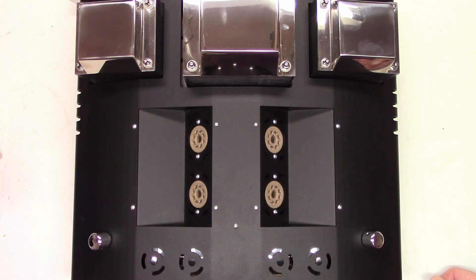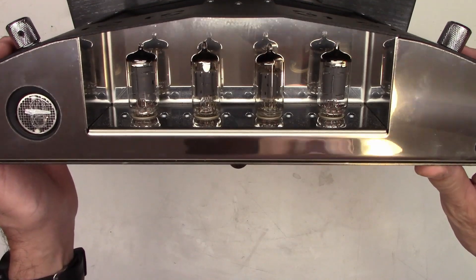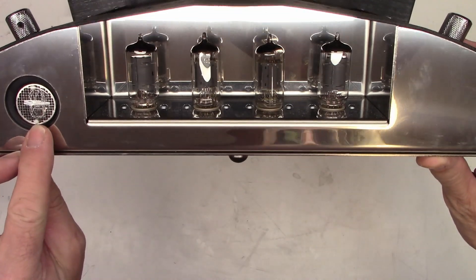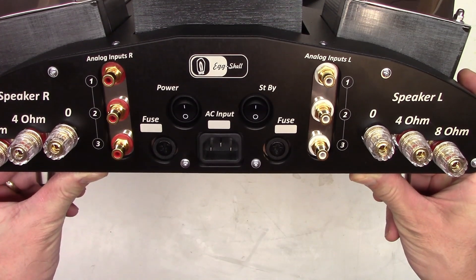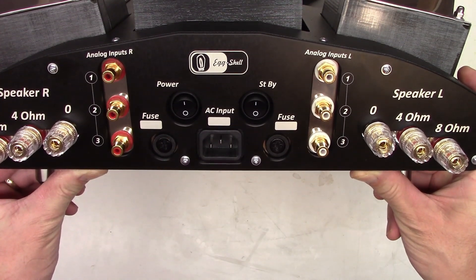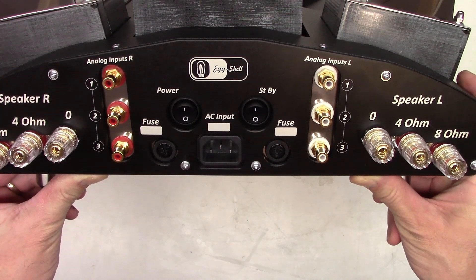Here it is. The eggshell amplifier. There are the four driver tubes. And it looks like a Nixie display over here. Power standby. A couple of fuses. A standard computer cord input. Three inputs per channel. And a 4 ohm or 8 ohm selectable output.